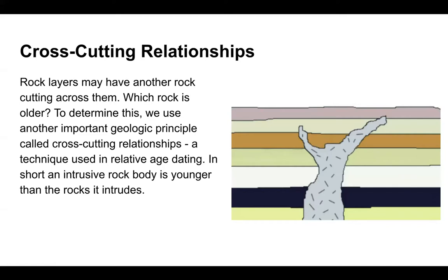Rock layers may have another rock layer or other rocks cutting across them. To determine which rock is older, we use the principle of cross-cutting relationships, a technique used in relative age dating. In short, an intrusive rock body is younger than the rocks that it has intruded upon, as shown in this diagram.